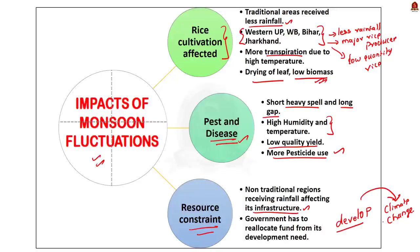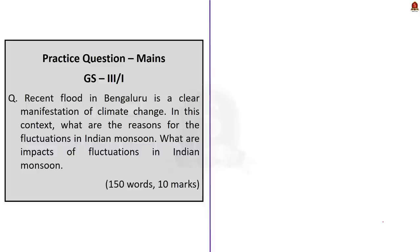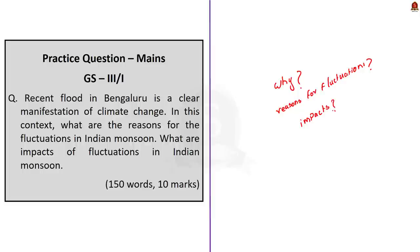In this news article discussion, we saw in detail why monsoon is very important for India, then the three main reasons for unpredictable fluctuations in monsoon this year, and finally the impacts of climate change-induced monsoon fluctuations. With these learned points, let us move on to the next news article discussion.